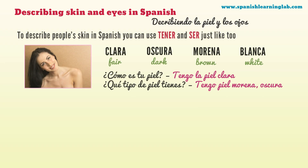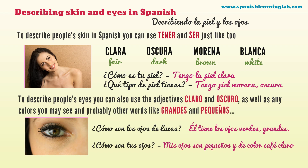Describing skin and eyes in Spanish — Describiendo la piel y los ojos. To describe people's skin, you can use the verbs tener and ser. Adjectives you may need: clara, oscura, morena, blanca. Examples: ¿Cómo es tu piel? Tengo piel clara. ¿Qué tipo de piel tienes? Tengo piel morena oscura. To describe eyes, you can use adjectives like claro, oscuro, any colors, grandes, pequeños, and others. Examples: ¿Cómo son los ojos de Lucas? Él tiene los ojos verdes, grandes. ¿Cómo son tus ojos? Mis ojos son pequeños y de color café claro.